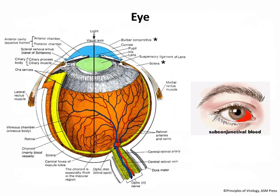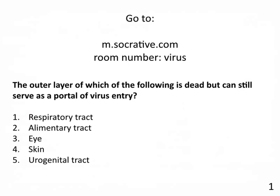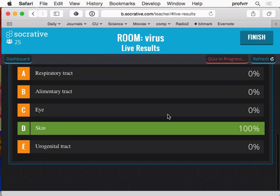The outer layer of which of the following is dead but can still serve as a portal of virus entry: respiratory tract, alimentary tract, eye, skin, or urogenital tract? All 25 of you got skin right.